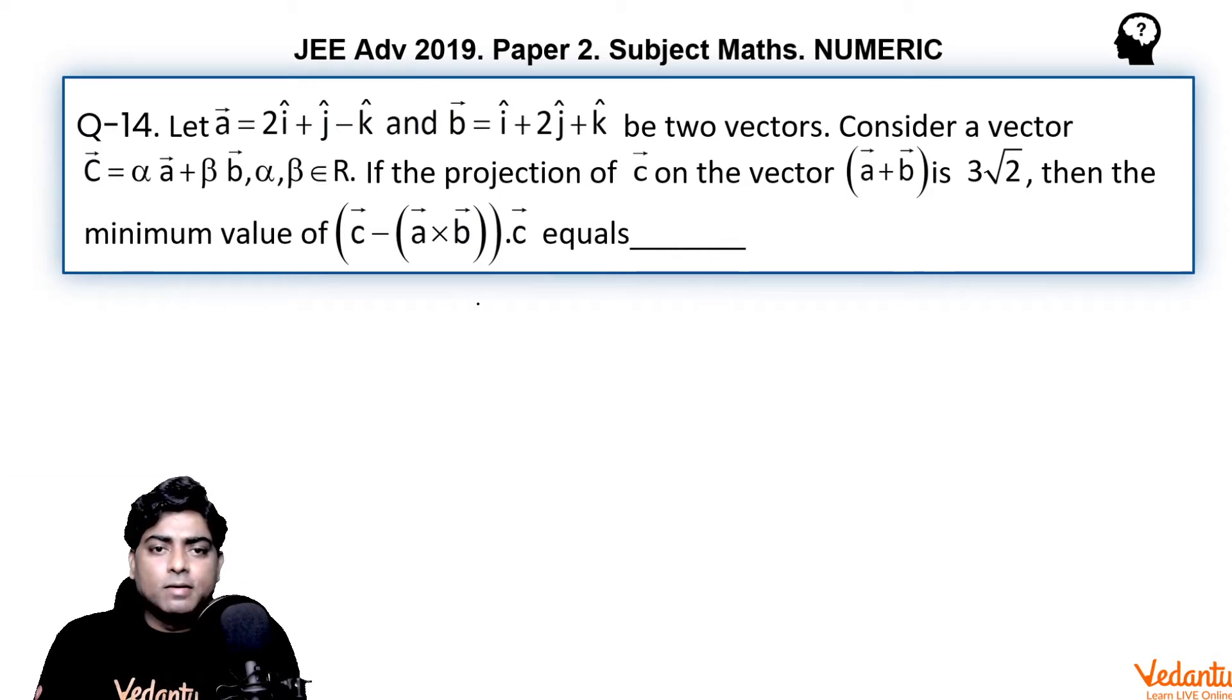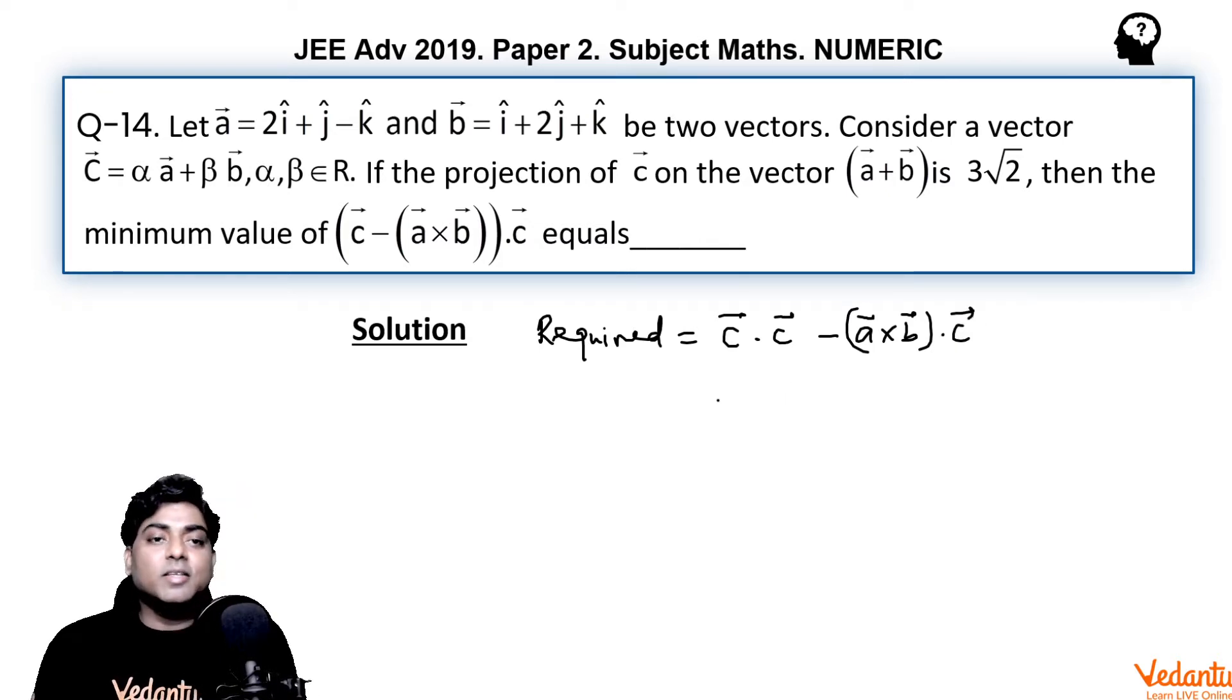Let's see how we can solve it easily. The final requirement is c·c - (a × b)·c. If you distribute the dot, c dot c minus a cross b dot c...